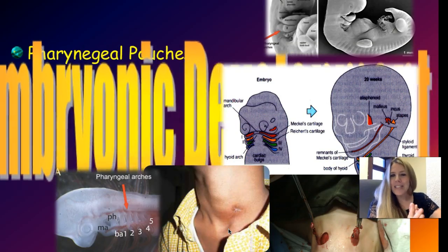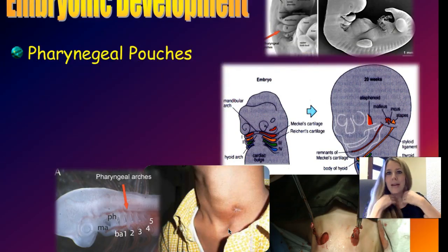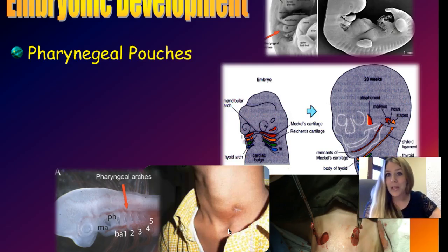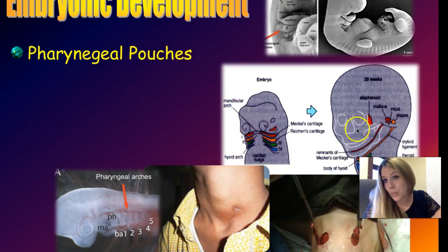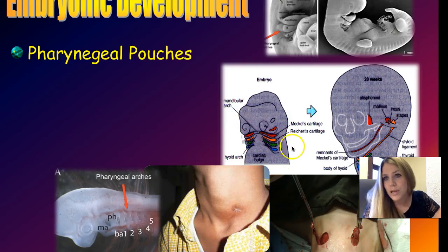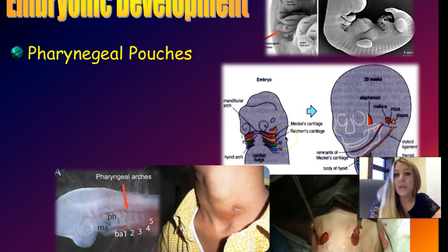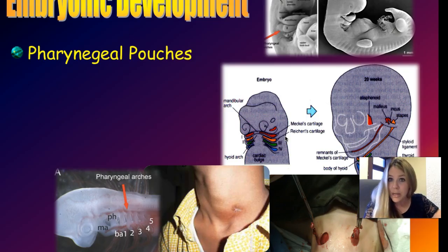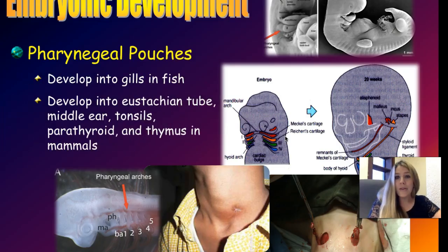Back to pharyngeal pouches: all vertebrates as embryos have these slits — pharyngeal pouches — on their necks. Here's what it looks like in an embryo and in an adult human, where different branchial arches become different structures. For humans, the slits close up and develop into other throat structures. In fish, they develop into actual gills.